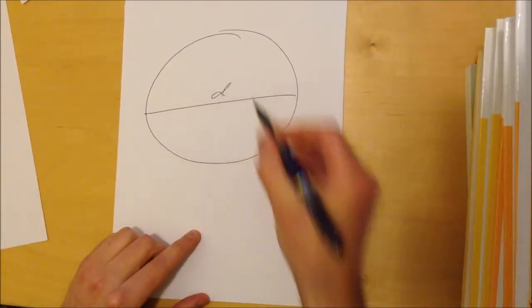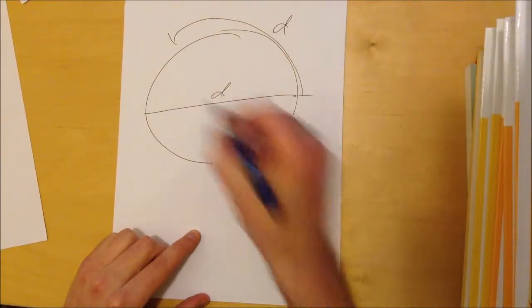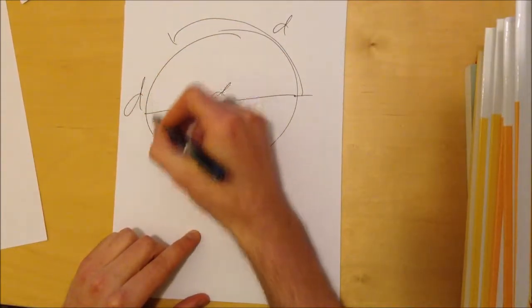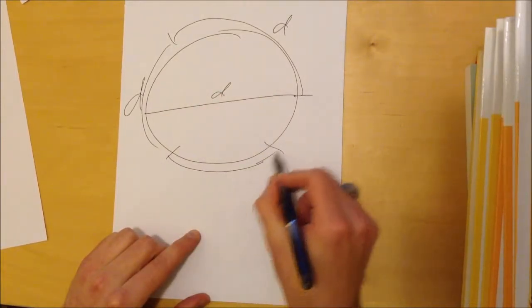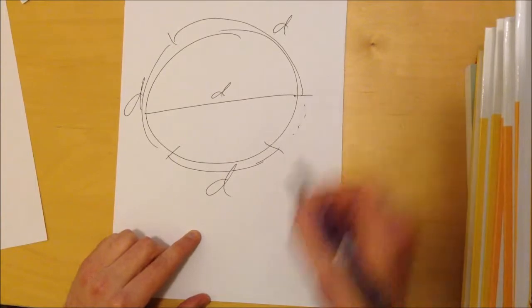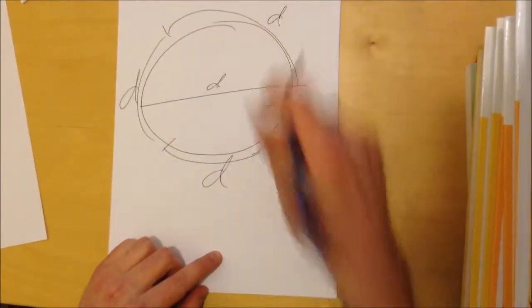So you take your diameter. Say you do the same trick. You're going to get to about here. This is one diameter. You do it again, you get to about here. This is another diameter. And then you get to about here. This is like three diameters and a little bit. So this is pi D, three and a little bit of the diameter.